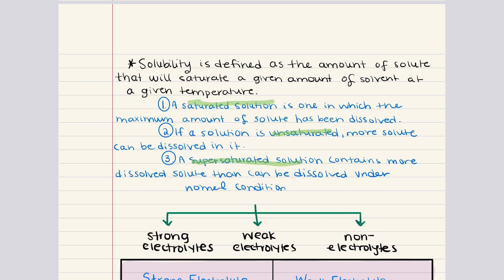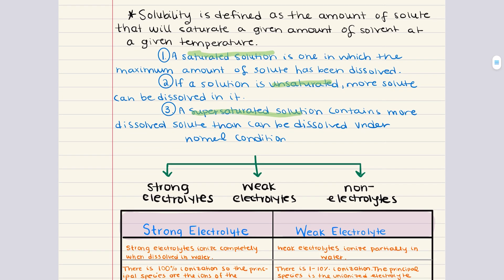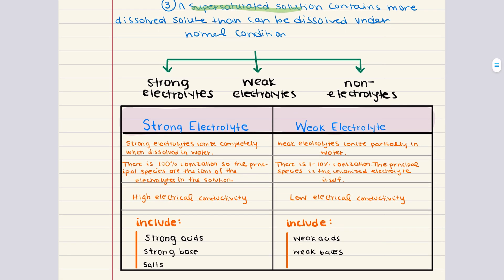Now, when we're discussing solutions and solubility, it's important to understand how different solutes behave when they're dissolved in solvents, particularly in water. This behavior can be categorized based on the solute's ability to dissociate into ions, and that leads to their classification as either a strong electrolyte, a weak electrolyte, or a non-electrolyte. So, let's define these.